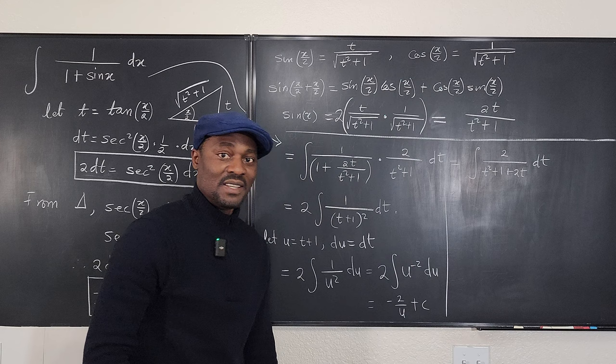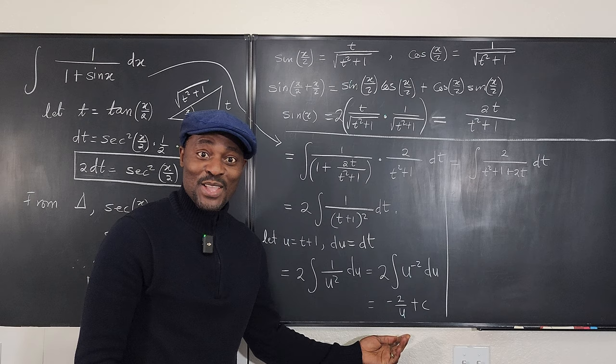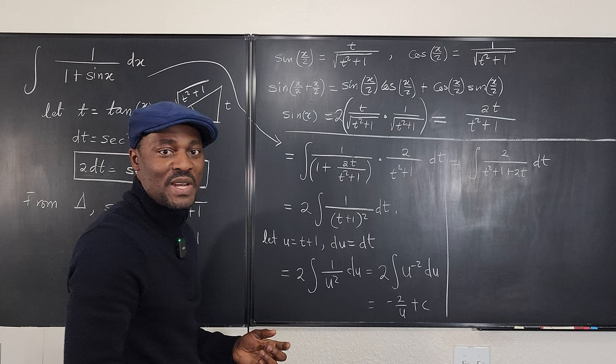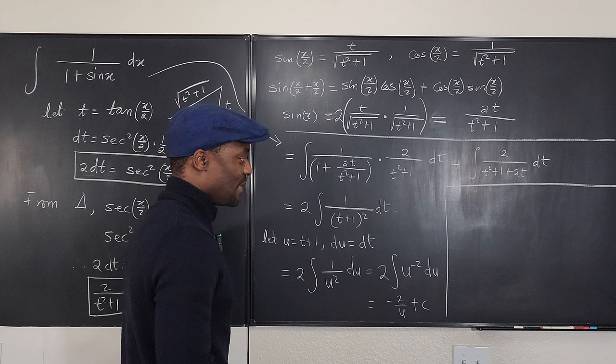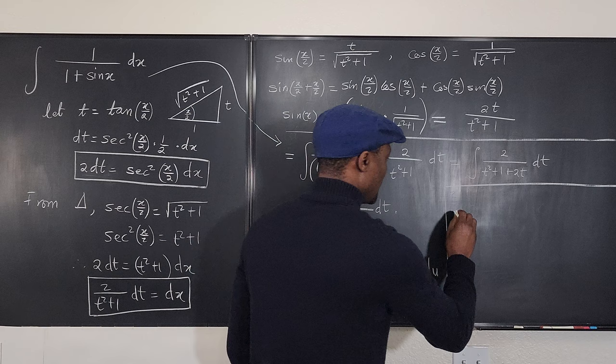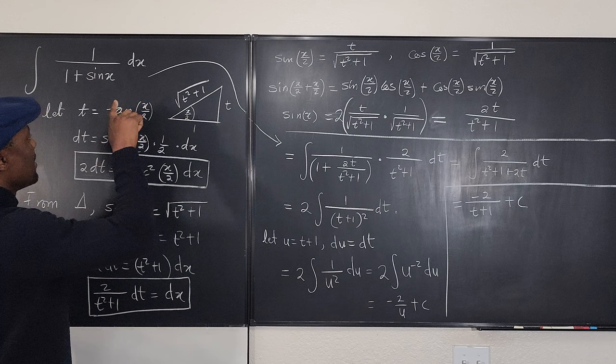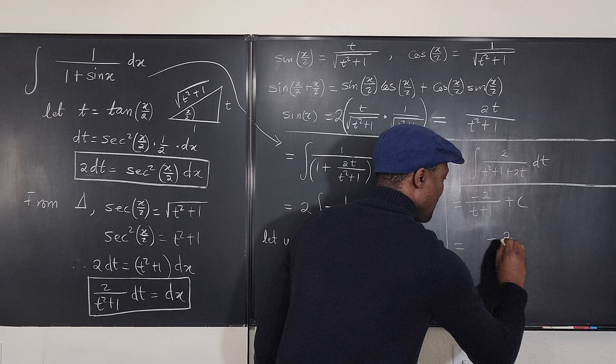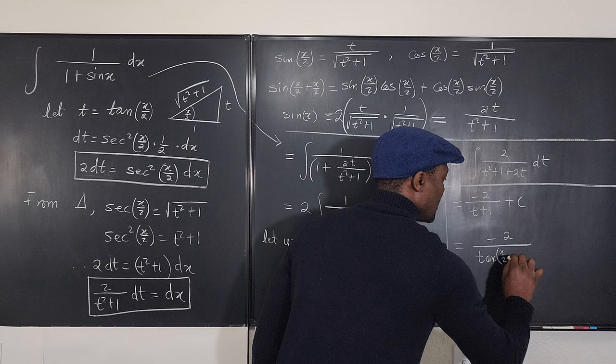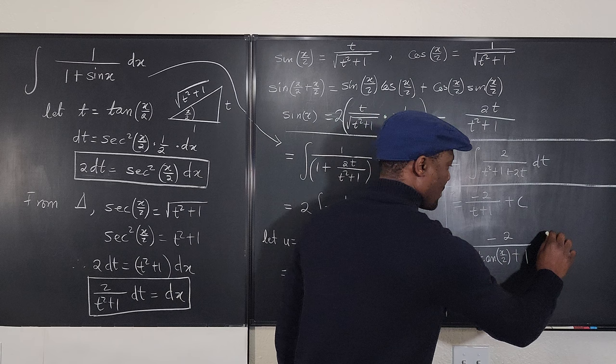Now we back-substitute. u was t plus 1, so we have negative 2 over (t + 1) plus C. And t was tan(x/2), so the final answer is negative 2 over (tan(x/2) + 1) plus C.